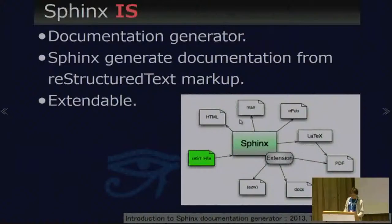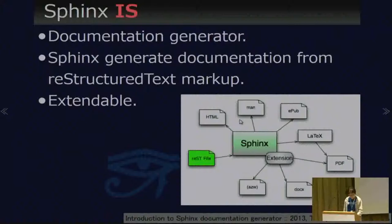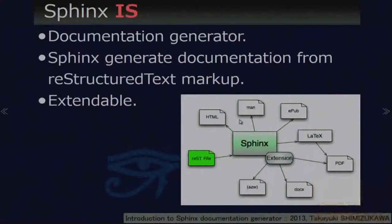What is Sphinx? Sphinx is a documentation generator. Sphinx generates documentation from reStructuredText markup. In other words, Sphinx reads RST text files and outputs HTML, EPUB, PDF, or other several formats. Sphinx is extendable, so you can also output in a different format or read files in a different format. Normally Sphinx reads RST files only, but you can extend it by writing an extension.